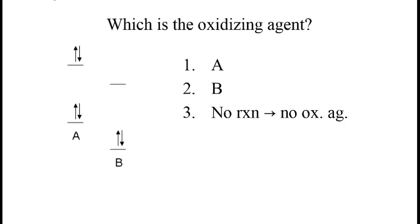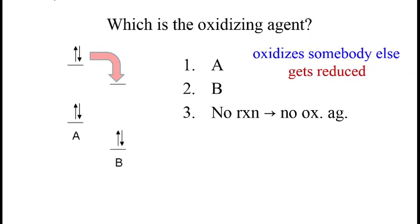We could also ask what is the oxidizing agent in this process. We've already decided that an electron transfer process will occur, so again we can rule out answer number 3. We need to remember that an oxidizing agent oxidizes somebody else and gets reduced in the process. In this case, B is gaining electrons, getting reduced, so B is the oxidizing agent.